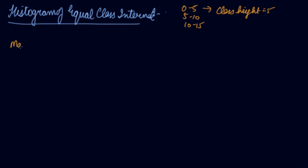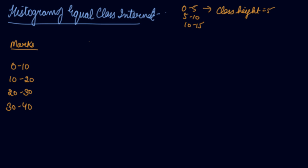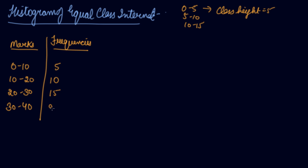Let us see how to make the histogram. We are given the marks in statistics: 0 to 10, 10 to 20, 20 to 30, 30 to 40. The frequencies given are 5, 10, 15, and 20. So the total is 50.